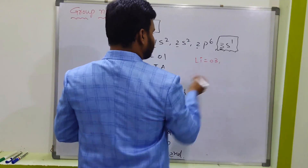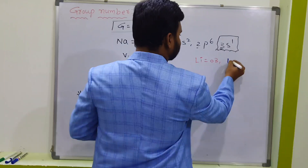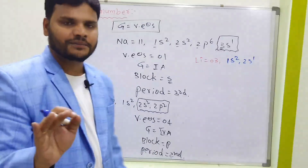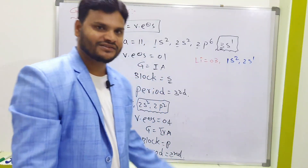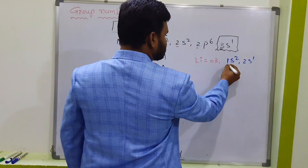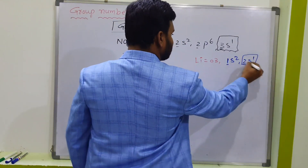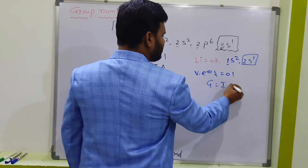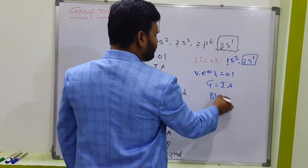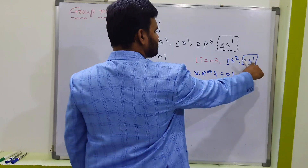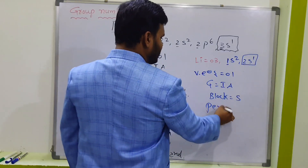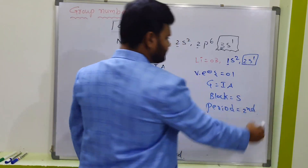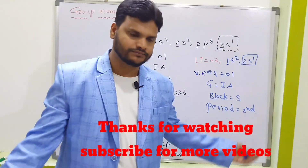For lithium, atomic number is 3, and its electronic configuration is 1s², 2s¹ — total 3 electrons. The second energy level contains only one electron, so valency electrons equal 1, and the group number is 1. The last electron is in the S orbital, so lithium is an S block element. The last energy level is 2, so lithium belongs to the second period.